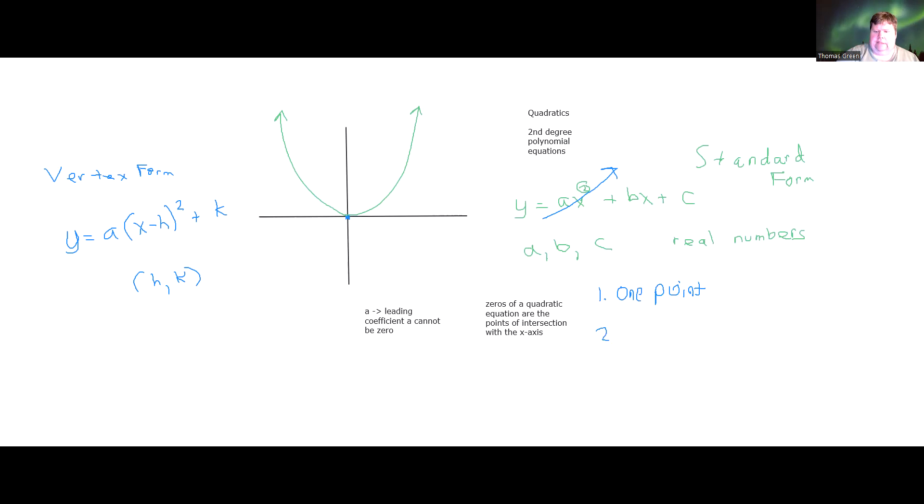The second case would be that there's two points. The third case would be no points of intersection. Now this is significant because in the first two cases where you either have one point of intersection between the graph of the parabola and the x-axis, that means you have one real valued solution to that quadratic equation. If there are two points of intersection with the x-axis, you have two real valued solutions to the quadratic equation.